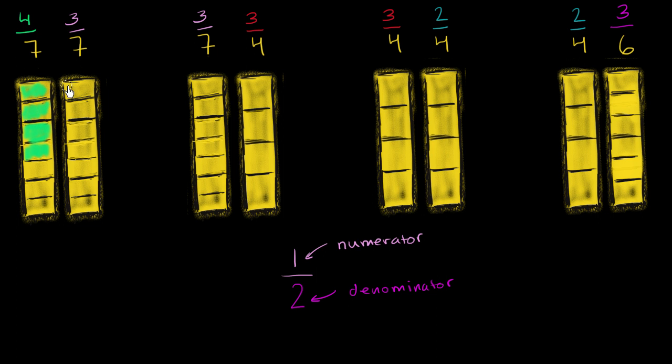But now let's color in 3 sevenths just so we can compare. So 1, 2, 3 sevenths. And so it's pretty clear that on the left-hand side, we are shading in more of the whole than on the right-hand side. So 4 sevenths represents a larger fraction, more of the whole, than 3 sevenths. And the way that we can state that comparison mathematically is with the greater than symbol. We can write 4 sevenths is greater than 3 sevenths.